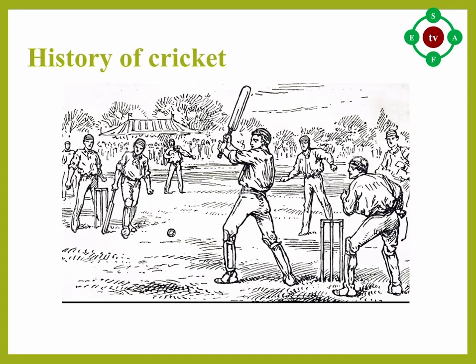In 1844, the first ever international match took place between essentially club teams from the United States and Canada in Toronto. Canada won. In 1859, a team of English players went to North America on the first overseas tour. Meanwhile, the British Empire had been instrumental in spreading the game overseas, and by the middle of the 19th century it had become well established in Australia, the Caribbean, British India — which includes present-day Pakistan and Bangladesh — New Zealand, North America, and South Africa. In 1876–77, an England team took part in what is altogether recognized as the first ever Test match at the Melbourne Cricket Ground against Australia.